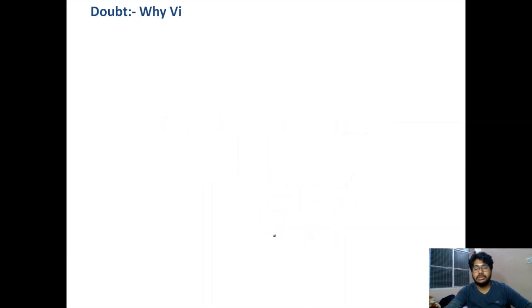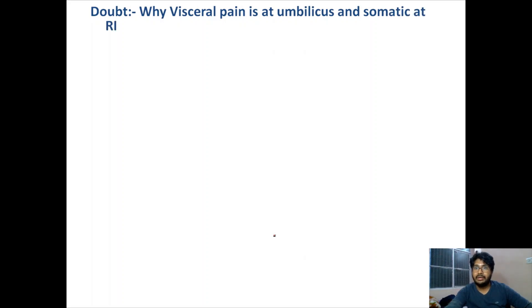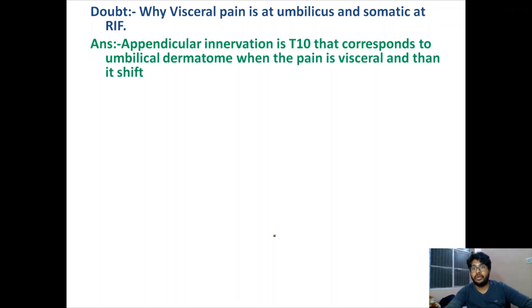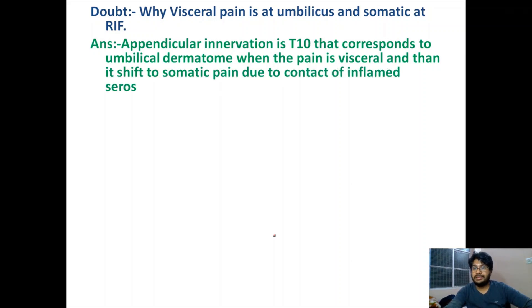A common doubt is: why is visceral pain at the umbilicus and somatic pain at the right iliac fossa? The answer is that appendicular innervation is T10, which corresponds to the umbilical dermatome — hence the initial visceral pain. It then shifts to somatic pain because the inflamed appendix comes in contact with the parietal peritoneum, shifting the pain to the right iliac fossa.